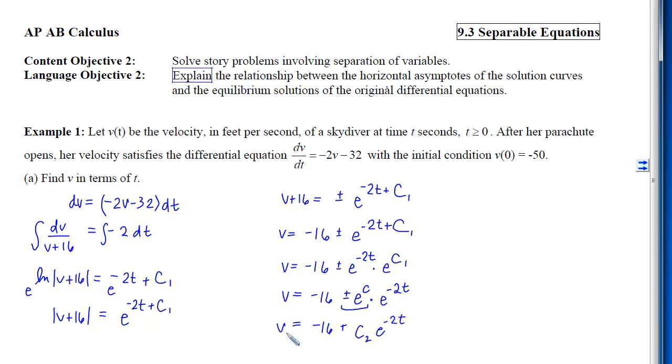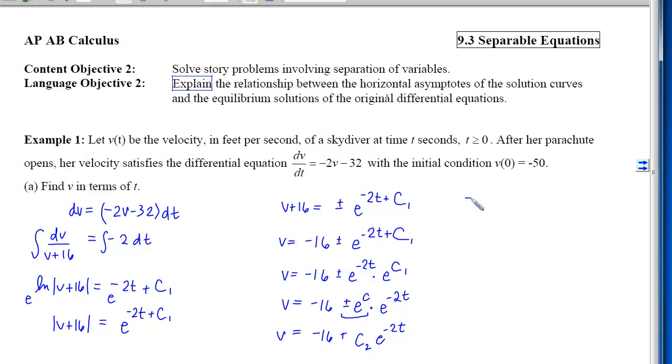When I do that, now plugging in the initial condition makes it pretty simple. I'll see that my velocity is -50 when my t is 0. e to the 0 is just 1, so I get -50 = -16 + c sub 2, which means c sub 2 is going to be -34. We are selecting the negative branch because of the initial condition.